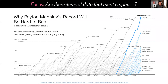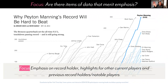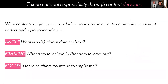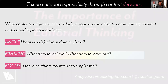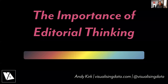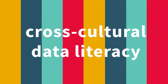Going back to the main example, you can see that Peyton Manning stands out with a thick blue line and a bold label. The other current players have a blue line and a label. The previous record holders and famous players have a dark line and a label. Everyone else is in the background — subdued, greyscale, no labels, included for shape but not for detail. In summary: what contents do you need to include to communicate the most relevant understanding to your audience? What angle or angles of analysis? What data to include or leave out — that's the framing. And are there any elements important to emphasise and draw focus towards? That's the importance of editorial thinking.